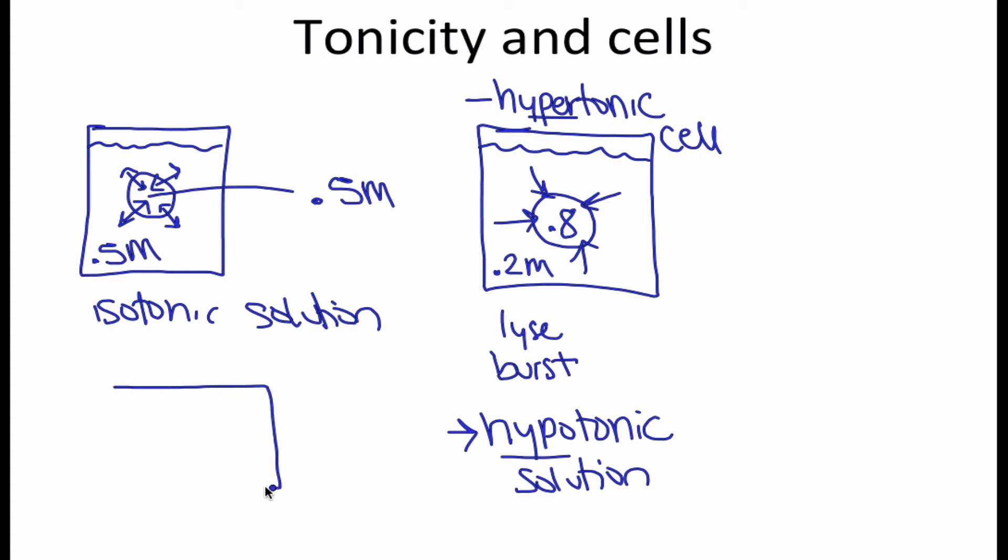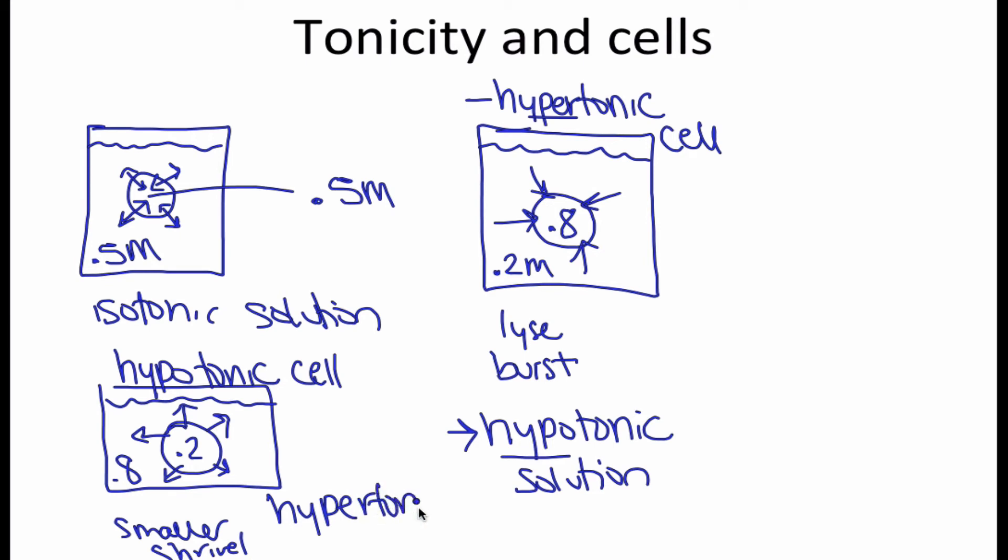Our next example then. Now let's say inside of the cell is .2 molar and the outside of the cell is .8 molar. So now water is going to move out of the cell. If water was to move out of a cell, what would happen to it? It'll get smaller or maybe shrivel up, anything like that. So now we can say that the cell is hypotonic. So we have a hypotonic cell in comparison to the solution. Or we can say that our solution is hypertonic.